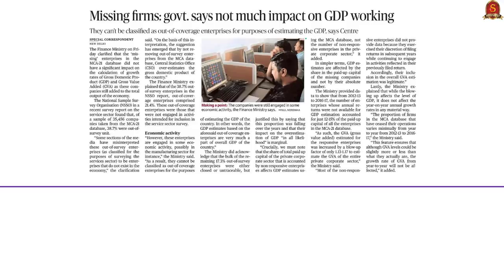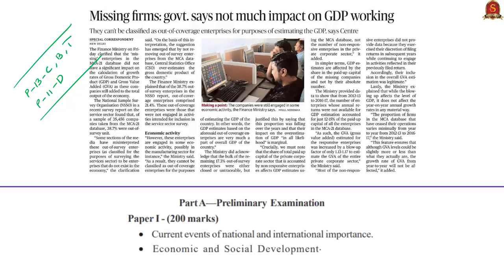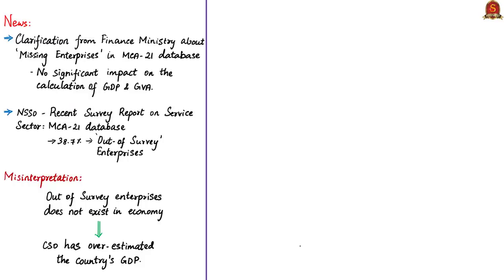The next article appears on page 13 of Chennai, Bengaluru and Thiruvananthapuram editions and page 11 in the Delhi edition. It speaks about the misinterpretations of the missing companies in the MCA 21 database. The Finance Ministry has clarified that the missing enterprises in the MCA 21 database did not have a significant impact on the calculation of growth rates of GDP and GVA, as these companies are still added to the total output of the economy and cannot be classified as out-of-coverage enterprises for the purposes of estimating the GDP.